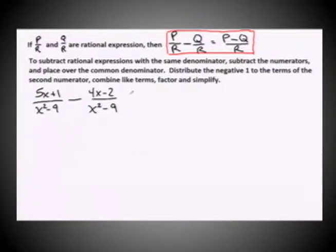Let's take a look at how this example works out when we apply these steps. We have 5x plus 1 over x squared minus 9, and we're going to subtract 4x minus 2 over x squared minus 9. Notice we already have the very nice situation of having common denominators here. Our common denominator is x squared minus 9.